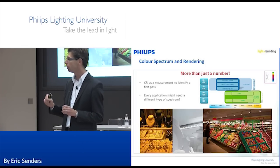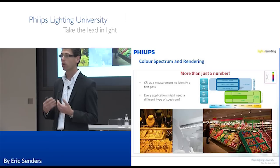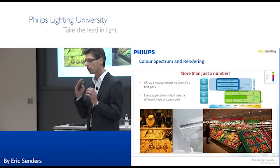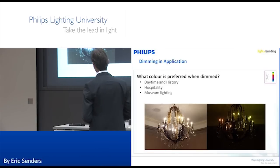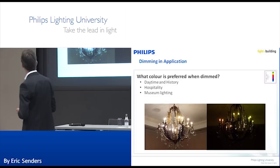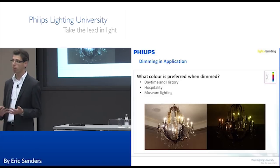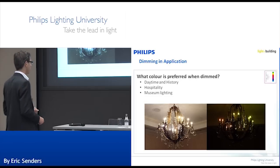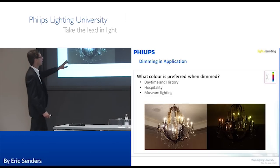It's about CRI, but it's also about translating CRI into the application by thinking about specific R values — R9, R15, or a crisp white color. Don't only look at CRI; look at more than just the CRI. CRI is only one thing, but what happens to your color spectrum when you dim your LEDs?